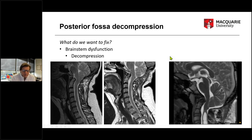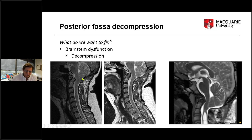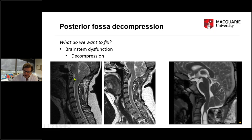Starting with brainstem compression — the image on the left shows a very abnormal angle at the base of the skull that causes compression of the brainstem. There's the Chiari malformation, and what's abnormal is the compression of the front, or anterior aspect, of the brainstem. That can cause double vision, difficulty swallowing, weakness, and a whole range of symptoms — a very specific problem related to that compression.